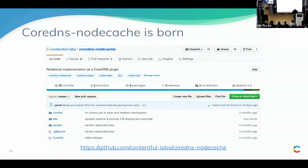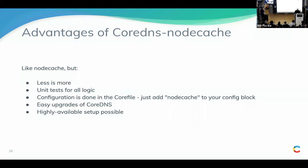So that's what we did — we wrote a project called CoreDNS node cache, a node cache implemented as a CoreDNS plugin. It has several advantages. First, less is more: it has less code, and the code it has is properly tested — many code paths in the original node cache were untested, so we added a lot of unit tests. Because it's a plugin, configuration is done in the Corefile instead of a mix of command-line parameters and config files — you just add 'node cache' and it's configured. And we can easily upgrade CoreDNS since we only rely on the plugin interface's two functions. As long as CoreDNS doesn't change the plugin interface, we don't have to change anything to stay up to date. This also allowed us to spend time getting high availability working.